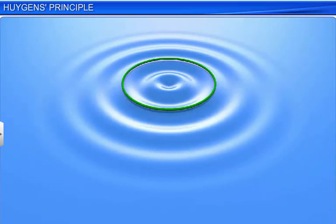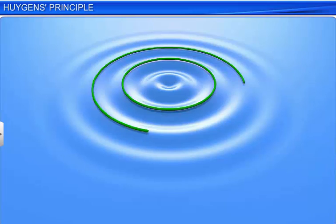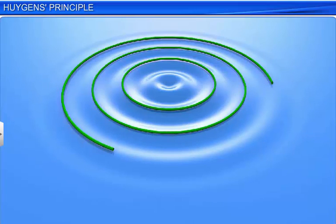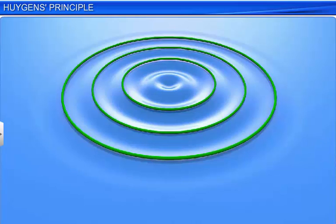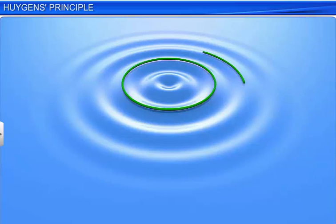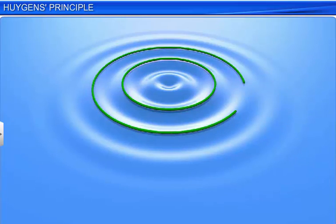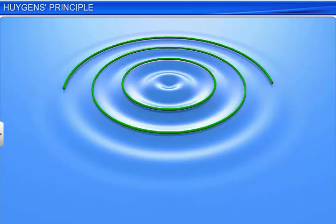The locus of all such points having the same phase of oscillation is called a wave front. In the case of water waves on the surface of water, we observe circular wave fronts. Each circular wave front is a locus of all points having the same phase of oscillation.